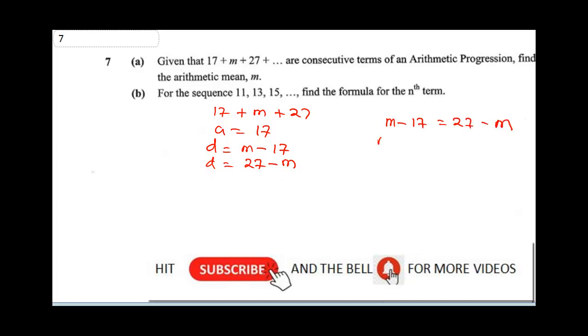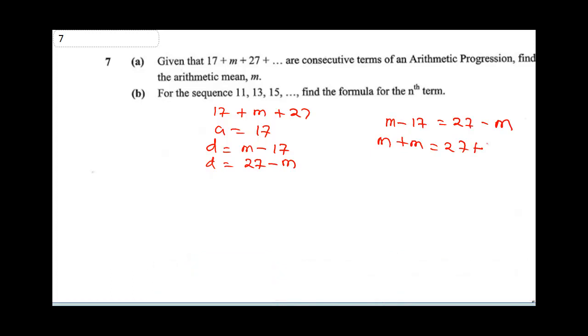Now let's collect like terms. M minus M coming over becomes plus M is equal to 27 plus 17. So this is going to be 2M equals 44. M is going to be 44 over 2, and that will give us 22.